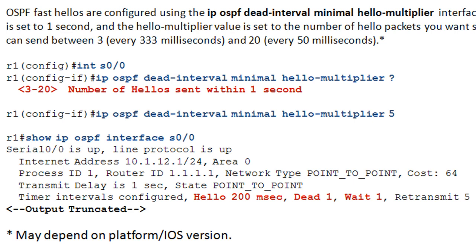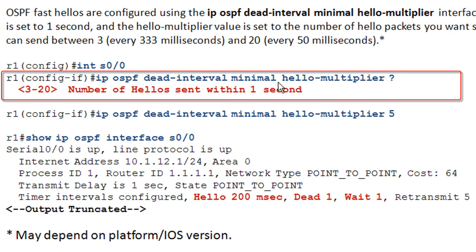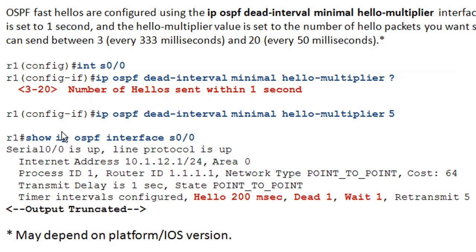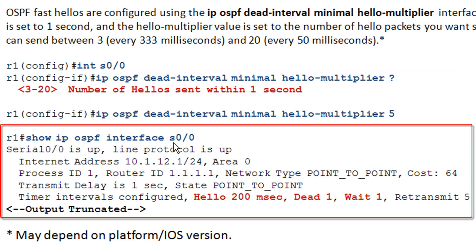We're going to dig into a packet capture and explain how this works — it's basically Cisco doing a hack on the OSPF Hello Interval and Router Dead Interval. To configure it: go under the interface, and use the dead interval rather than the hello interval, then specify the 'minimal' keyword. You'll have to put in a hello multiplier, which is the number of hellos sent within one second. You can send anywhere from 3 to 20 per second — in this case we've chosen 5. If we issue 'show ip ospf interface', our Hello Interval is 200 milliseconds and our dead interval has automatically been set to one second.